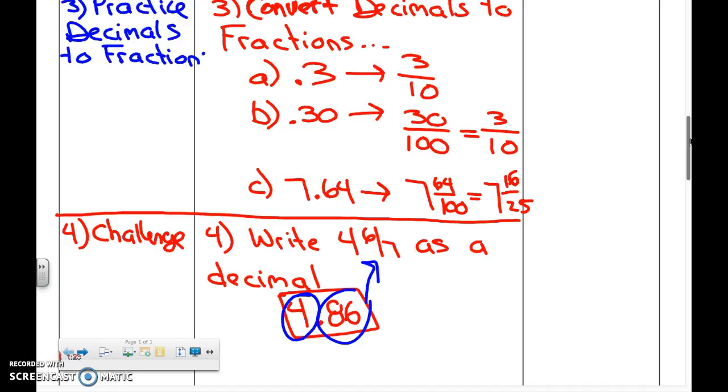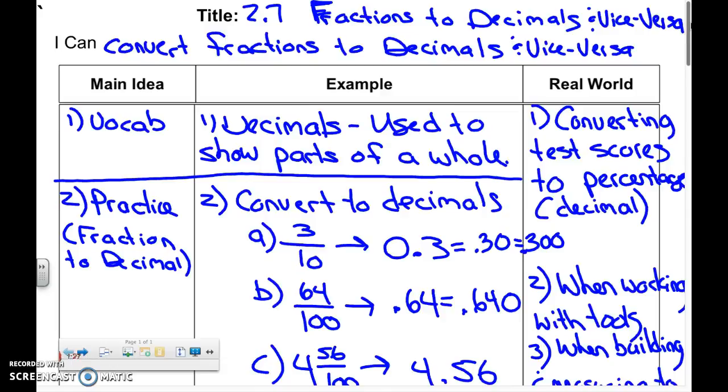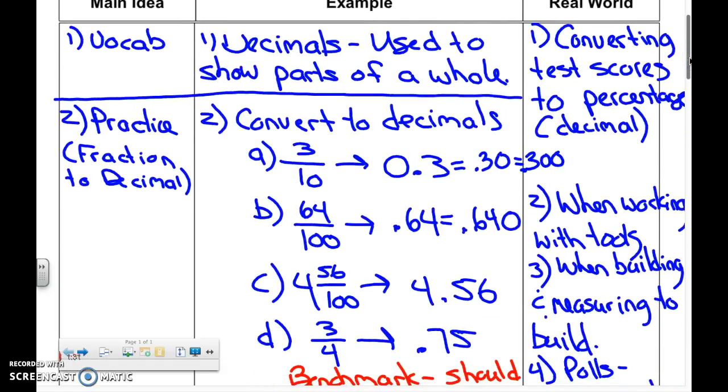And in the real world, when would you ever use this? Kiara? When you get your test back or worksheet back, you have a score - the number right over the number possible. You convert that into a decimal, which then can be converted to your percentage. That's a great example Kiara gave us.